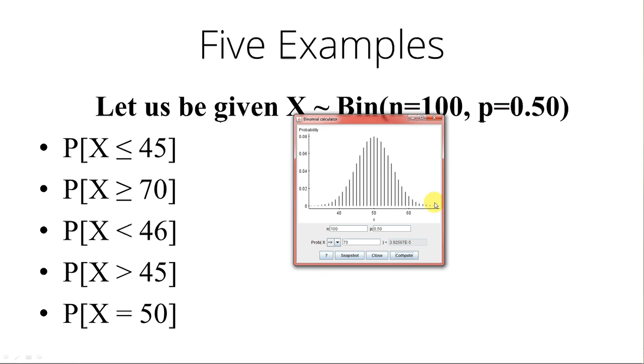I don't see any reds because the probability is so very small. It's 3.92507 times 10 to the power of negative 5. That e translates as times 10 to the power of.